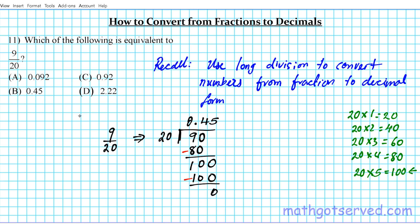So what is 9 over 20 in decimal form? Nine over 20 in decimal form is 0.45. The answer to question number 11 is option letter B.